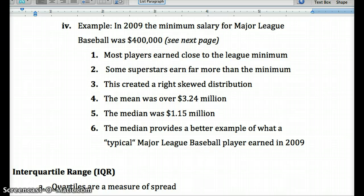So that meant that the mean was over $3.24 million, but the median was $1.15 million. So the mean would give us a skewed interpretation of where the true middle is, because it's pulled up by the people making $15 million, $20 million in a year.